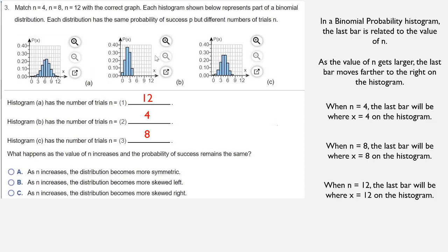As we look at the graphs, as n gets larger, they get more and more like a bell curve. And so as the n increases, the distributions become more symmetric. And that's the answer to the last part. And that's your answer.